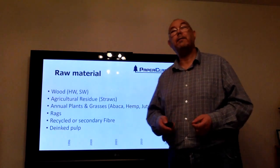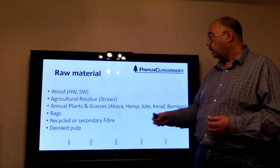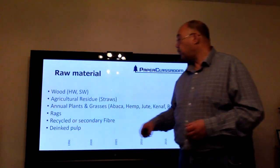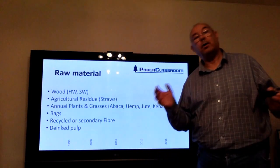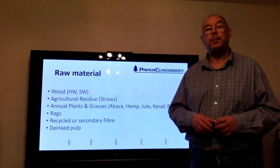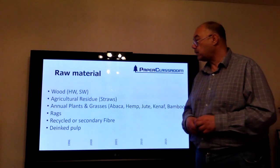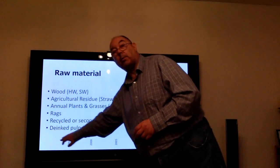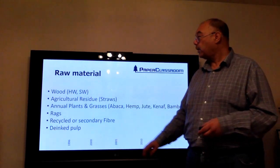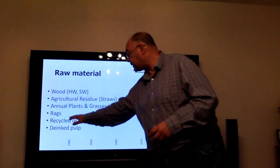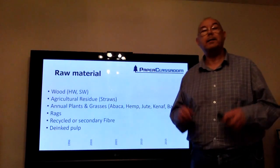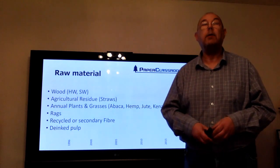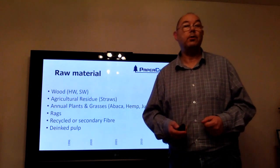The raw material may be rags — collecting old clothing and making paper from that, which is how paper making was done in Europe in the very beginning. You may classify it as recycled fiber or secondary fiber, depending on your terminology. It could also be a de-inked pulp — some mills take in secondary fiber, de-ink it, and sell sheets of de-inked pulp, just like you buy sheets of virgin pulp.